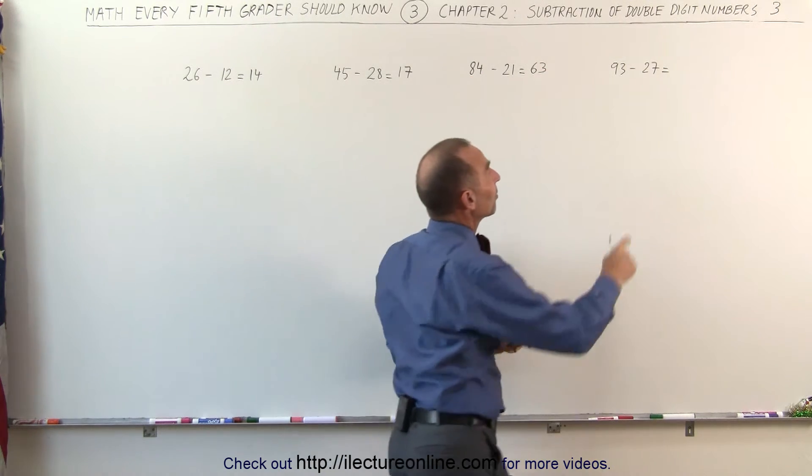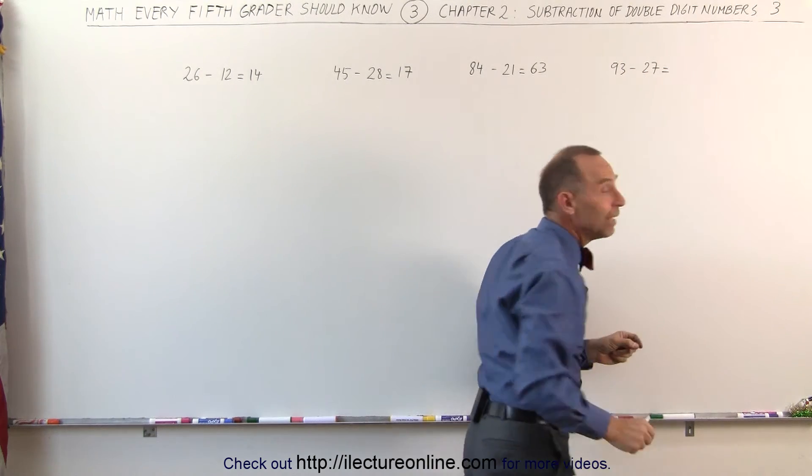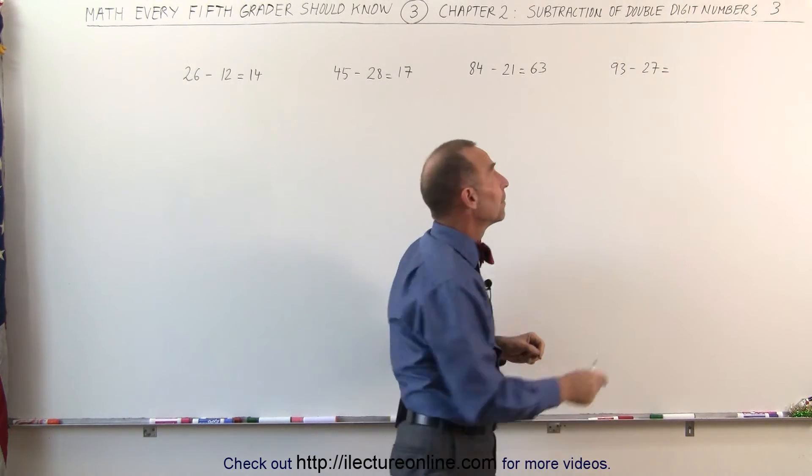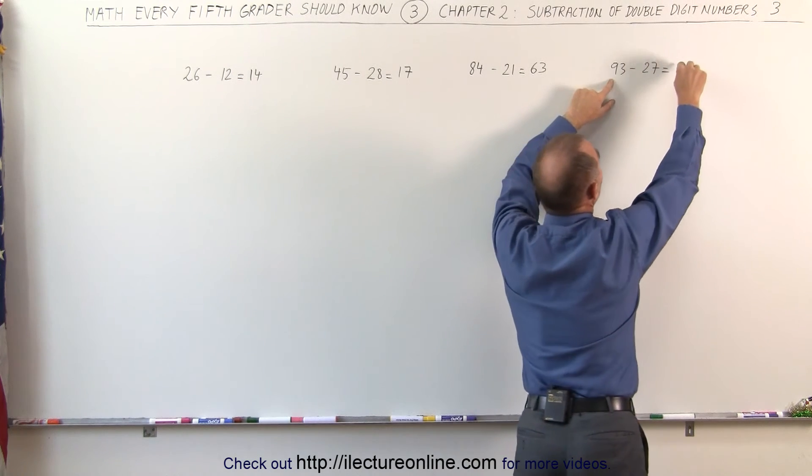But here I realize that the 7 is bigger than the 3, which means instead of subtracting 27, I'm going to subtract 30. 93 minus 30, 90 minus 30 is 60, so I get 63.